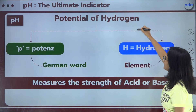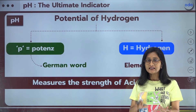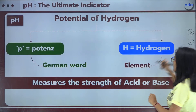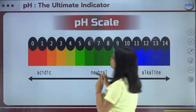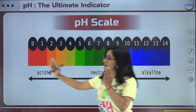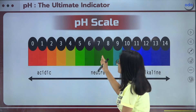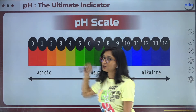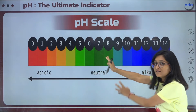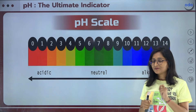The pH scale measures the strength of the acid or the base — whether it is more acidic or less acidic, more basic or less basic. Here you can see that if the pH is 7, we consider it neutral. When we go towards the left, the pH value decreases from 7 to 6, 5, 4, 3, 2, 1, 0 — pH value decreases but acidic strength increases. On the right side, moving from 7 towards 8, 9, 10, 11, 12, 13 — basic strength increases.